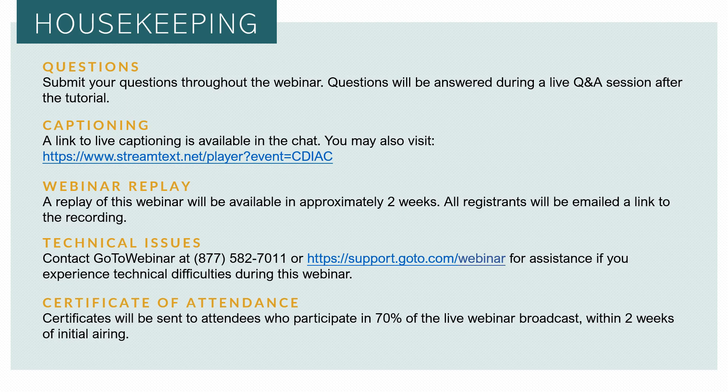If you encounter any technical issues, please call GoToWebinar's toll-free number 877-582-7011, or go online to support.goto.com/webinar. Certificates of attendance will be emailed to those who participate in the webinar today. To be eligible for a certificate, you must have personally registered and remained logged in for 70% of the webinar. If you meet those two requirements, you'll receive a certificate within a couple of weeks.